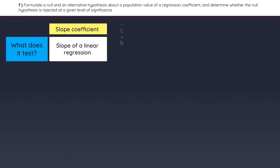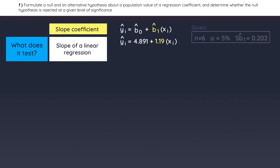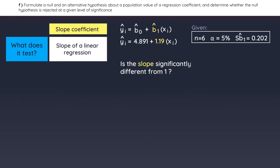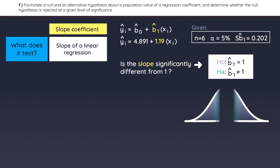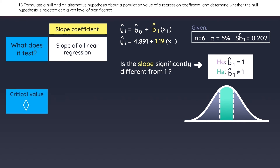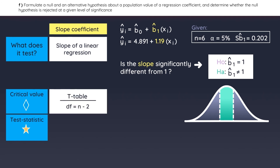In this example, here is the linear regression we will be testing, and these values are given. Assume that you want to test whether the slope is statistically different from a value of 1. Step 1 is to state the hypothesis. Let's draw the graph to visualize that it will be a two-tailed test. Next, we need to find the critical values and the test statistic. Using a t-table, a two-tailed test with 4 degrees of freedom and a 5% level of significance has these critical values — let's label them on the graph.